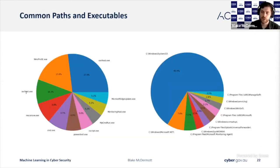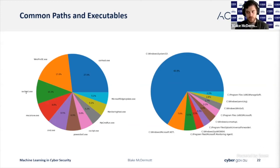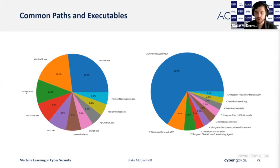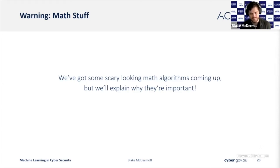Because servers are usually stood up to serve one task and only one task, it can become very easy to track the expected behavior of executables and the paths that they execute out of. This can also work for modules, file modifications, and registry modifications. To understand how we view the results with machine learning, we're going to have to go through a little bit of statistics theory.